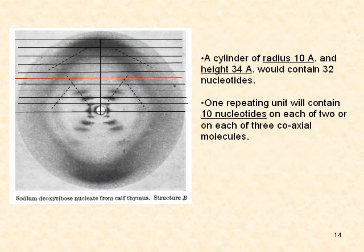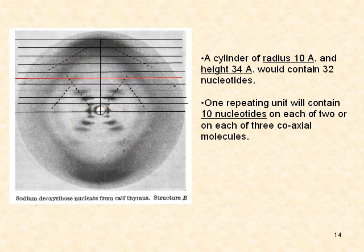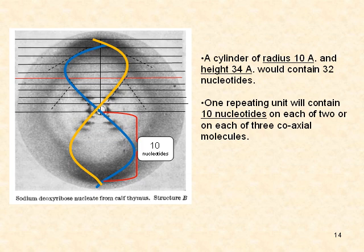Finally, a cylinder of radius 10 angstroms and height 34 angstroms would contain 32 nucleotides. One repeating unit will contain 10 nucleotides on each of two or three coaxial molecules.